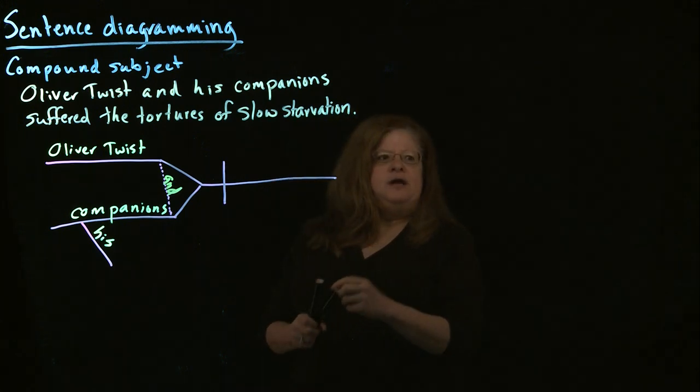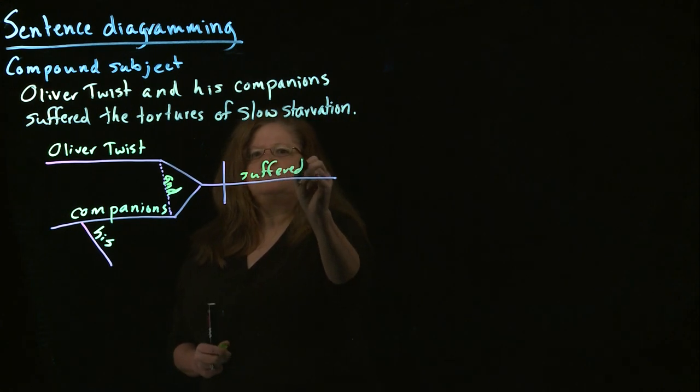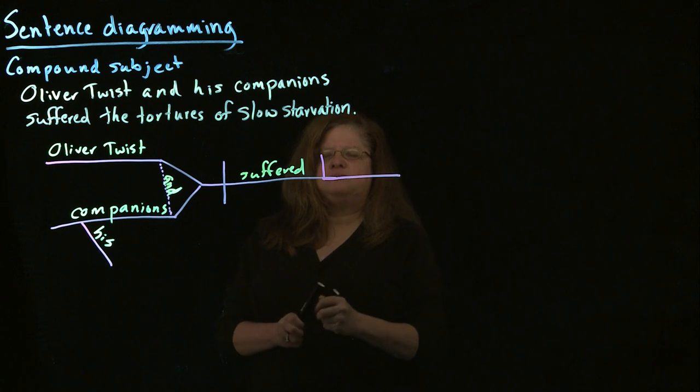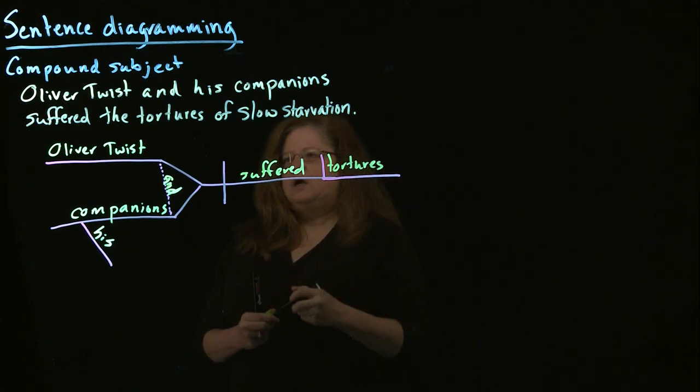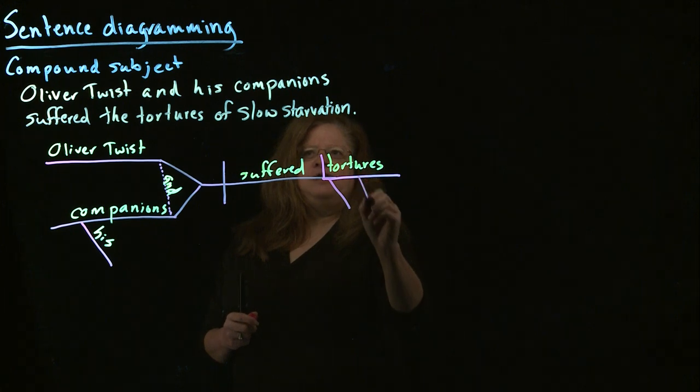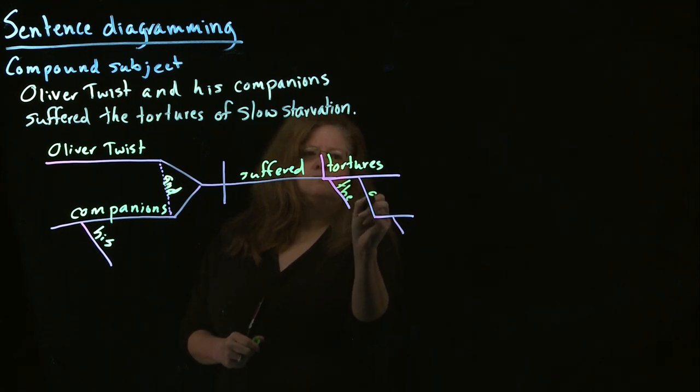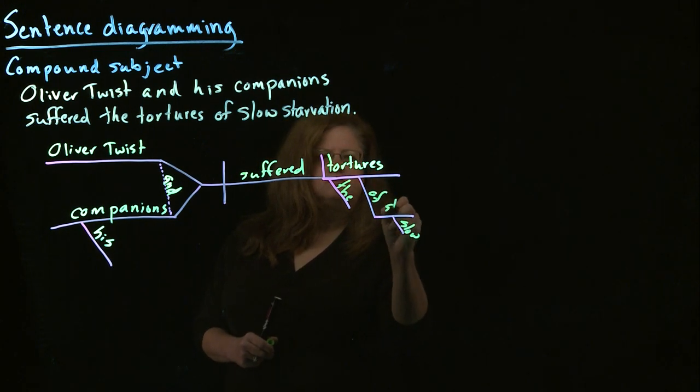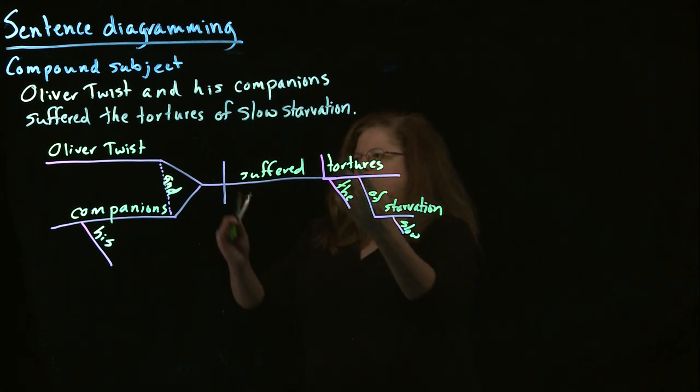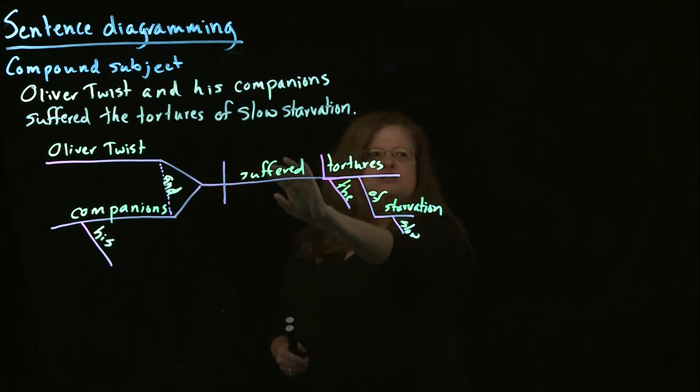And then we can go ahead and work the rest of the sentence. We have our verb suffered. We have our direct object, tortures. And then we have our modifiers. We have the and we have of slow starvation. So that will be our structure when we've got multiple subjects. We have a branch here that shows it. And then it comes together to show both of those subjects suffered.